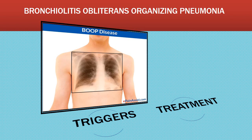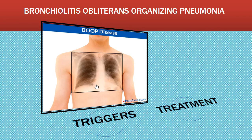Bronchiolitis obliterans organizing pneumonia (BOOP) is an inflammatory process that allows connective tissue plugs to form in the lower airways and the tissue between the alveoli. Suggested triggers include infectious processes, drugs such as chemotherapy agents and antibiotics — especially sulfa-based drugs — anti-seizure drugs, cocaine, or the presence of another connective tissue disorder. The most effective treatment is corticosteroid therapy.